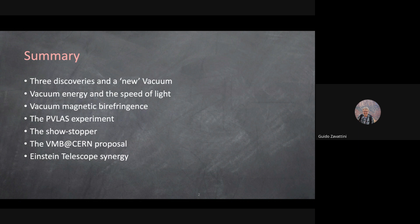We'll start by giving you an idea of how the concept of vacuum changed at the beginning of the 1900s with the discovery of quantum mechanics and relativistic quantum mechanics. Then we'll discuss vacuum energy, the speed of light, and vacuum magnetic birefringence — which is related to the speed of light. This is the basic subject of the experiment I've been working on for over 25 years.